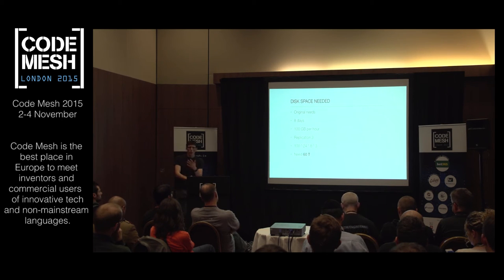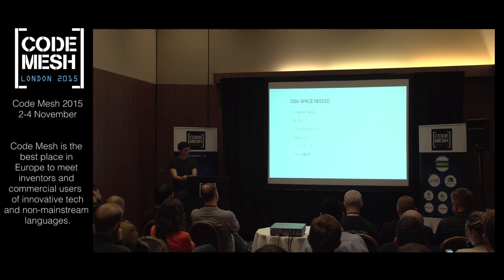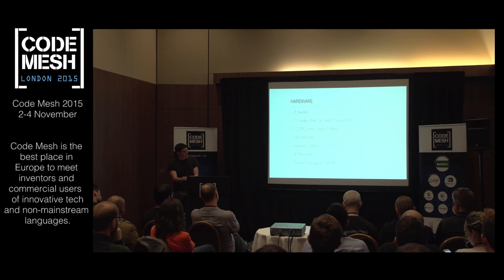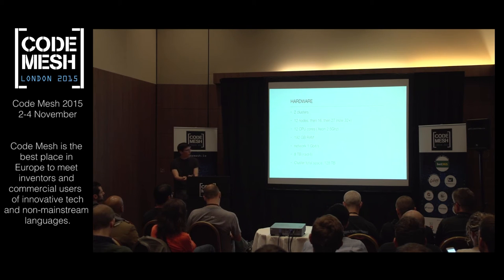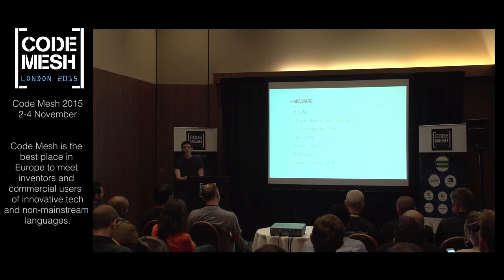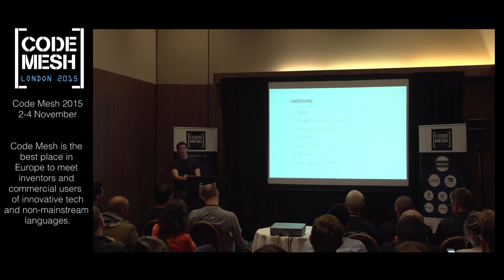We needed to store 60 terabytes of data — based on 100 gigabytes per hour with a replication factor of three and so on. We started with two clusters of 12 nodes each. Now we are at more than 32 nodes per cluster, with 12 CPUs, a lot of memory, 8 terabytes of storage, and 1 gigabit network — which is an issue. We are working toward 10G networking but had to cope with 1G until now.